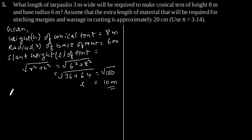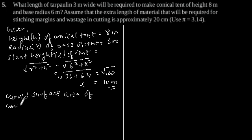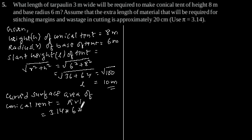Now, calculating the curved surface area of the conical tent: CSA equals pi r l. Pi is equal to 3.14 as given in the question, r is 6 and l is 10. By multiplying this, the curved surface area will be 188.4 meter square.